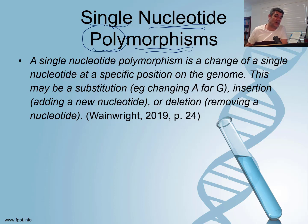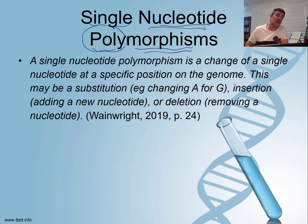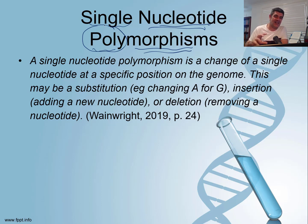This change may be a substitution — for example, changing an A to a G — an insertion, adding a new nucleotide, or a deletion, removing a nucleotide. It's worth noting that we're starting to creep into content developed in more detail in Module 6, where we look at mutation and changes in the DNA code and their consequences. But it has been placed here, so we will jump a little backwards and forwards in our discussions.